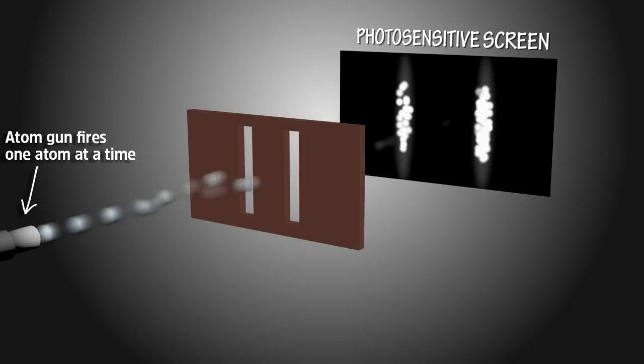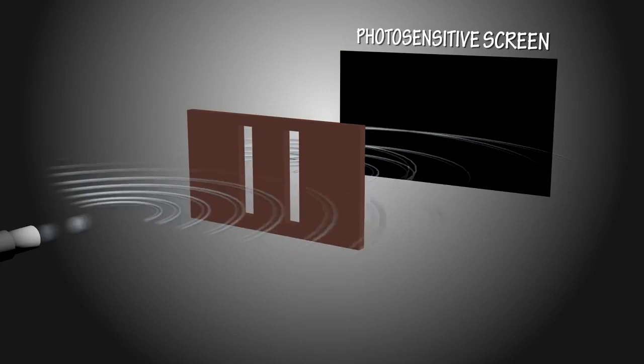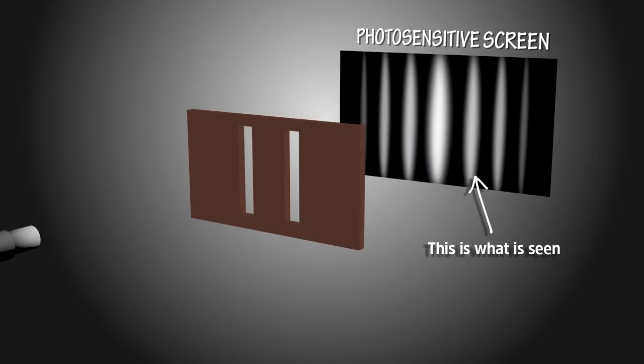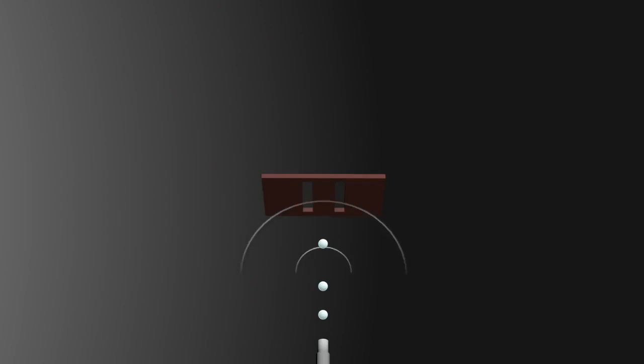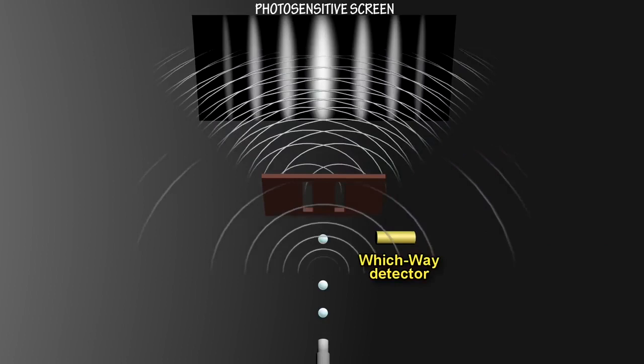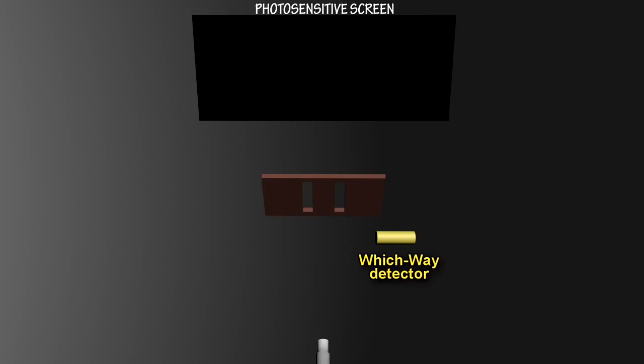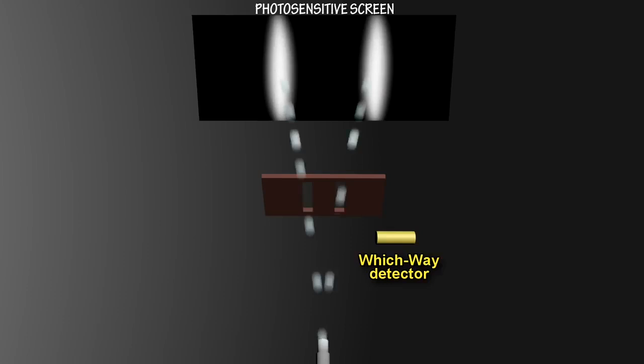If light is a particle, you would expect to see on the photosensitive screen two vertical lines — it's just like throwing a ball through a slit. But this is not what we see. What we see is light acting as a wave; it always acts as a wave. The only way this can happen is by the particle of light actually splitting into a superposition, then recombining and interfering with itself. The really amazing thing comes when we actually try to measure which slit it's going through — as soon as we try to detect it, the pattern at the photosensitive screen changes from an interference pattern to what we call a clump pattern. This is called collapsing the wave function.